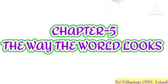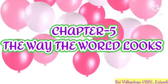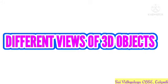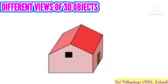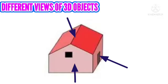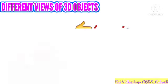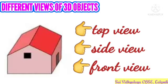Chapter 5: The Way The World Looks. Hello children, today we will learn the different views of 3D objects. Objects appear different in shape and color when viewed from different sides. I hope you would have learned these views of objects in your previous class.